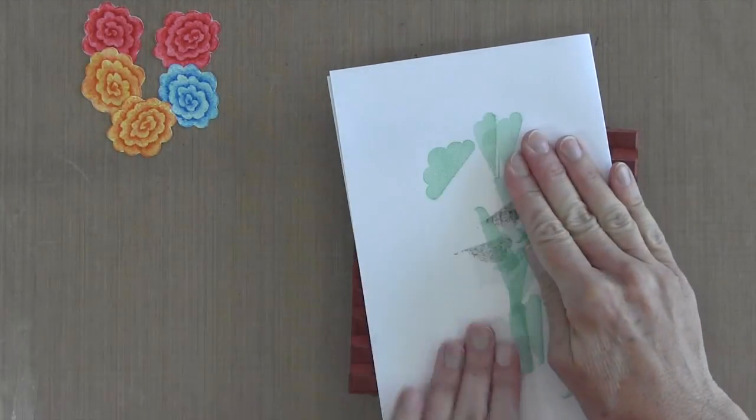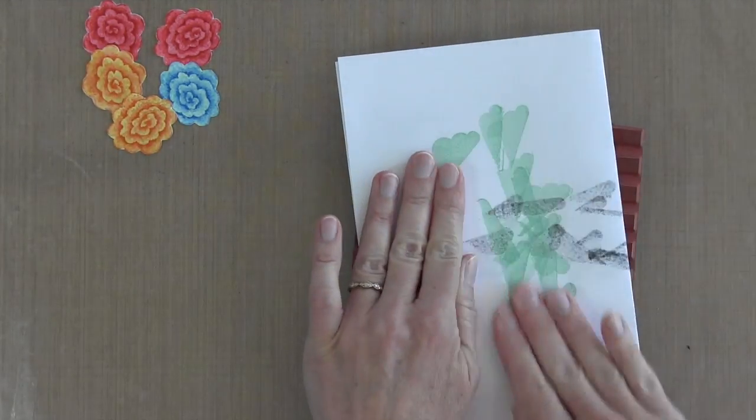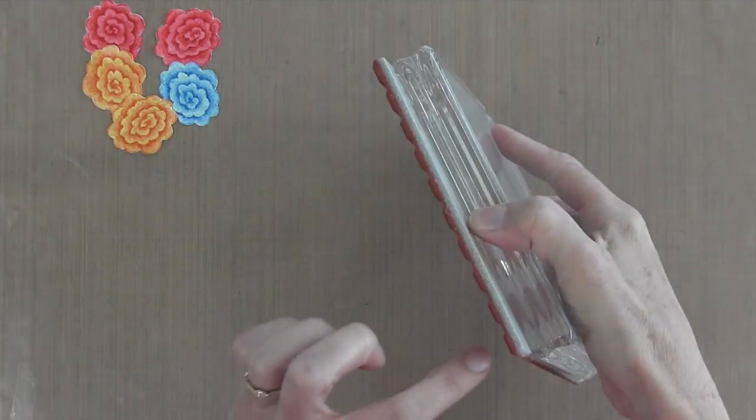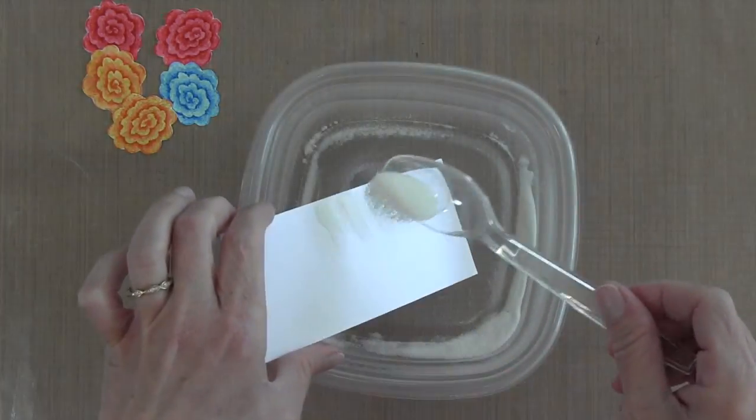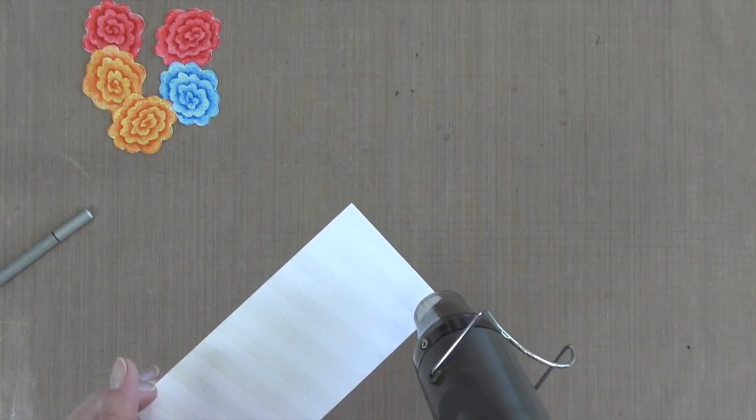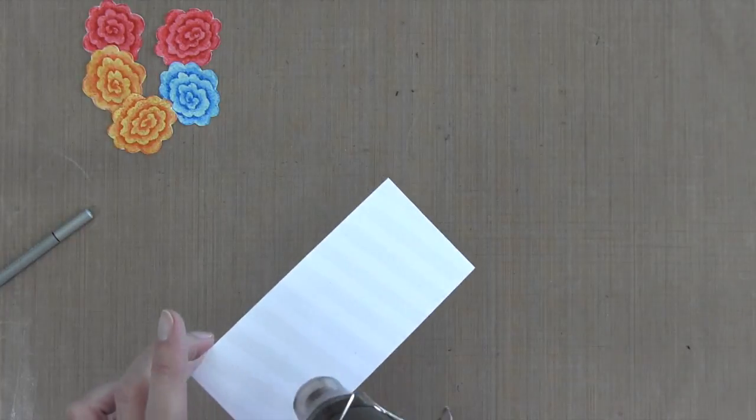But anyway, I'm going to stamp it with some Versamark ink and then I'll sprinkle it with some clear embossing powder. I wanted to add something behind these flowers but I didn't want to distract from them at all. So this clear embossing on white paper was just the perfect thing I needed.